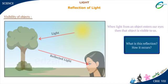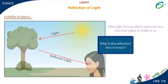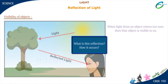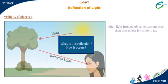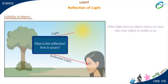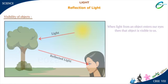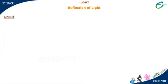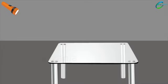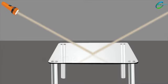What is this reflection? How does it occur? Let's find out more about it. Laws of reflection: a ray of light from a light source changes its direction of propagation and bounces back when it falls on a smooth shining object.